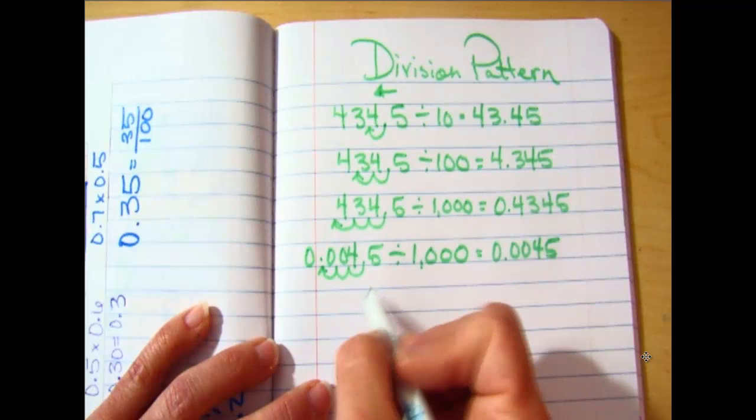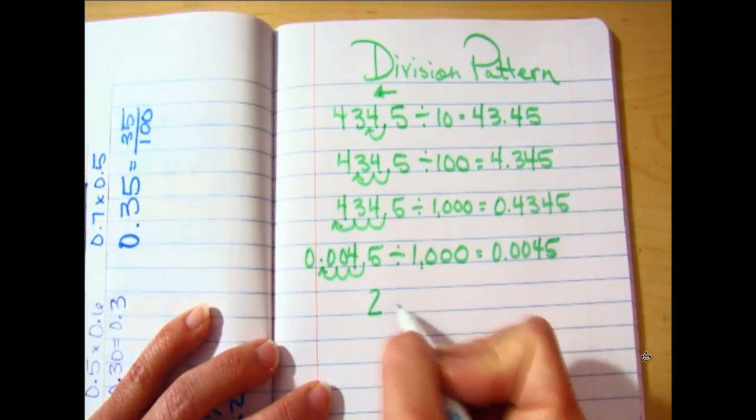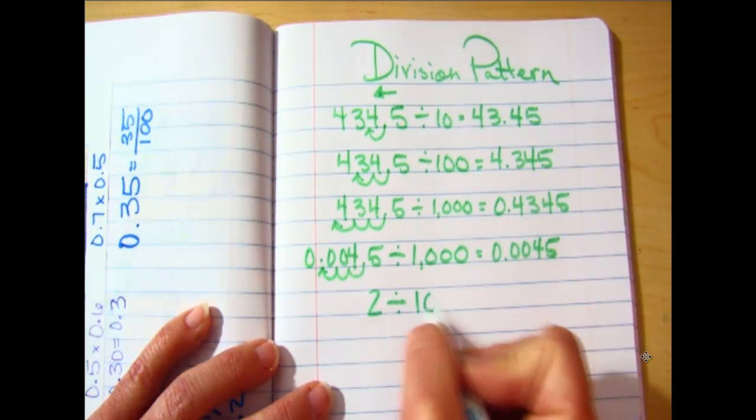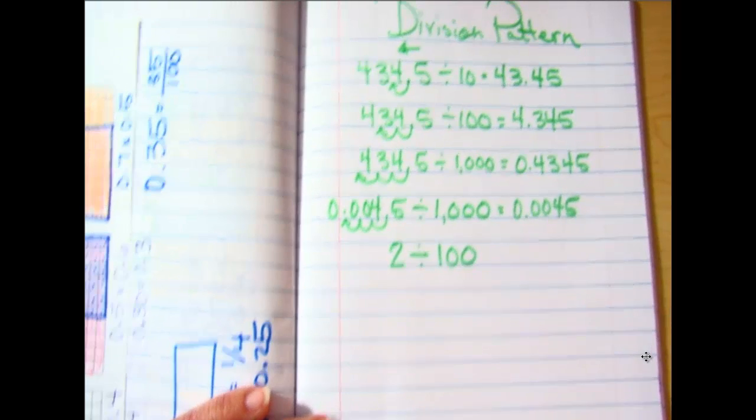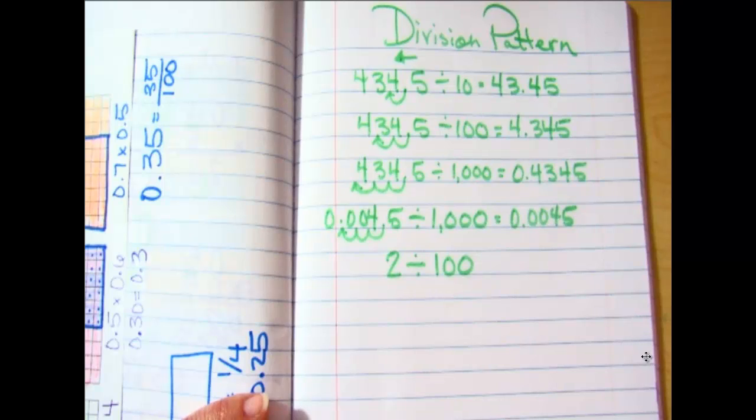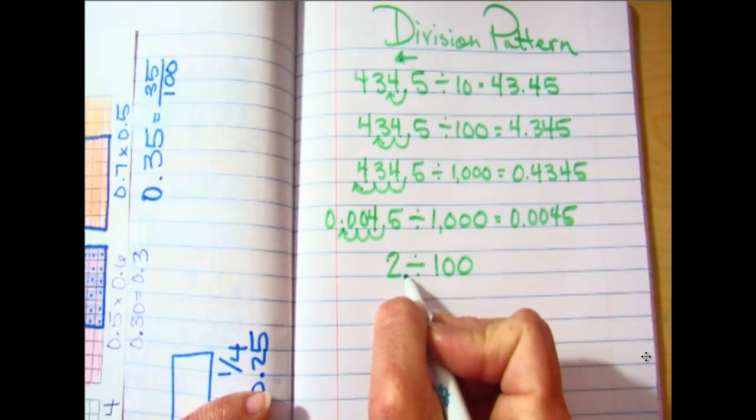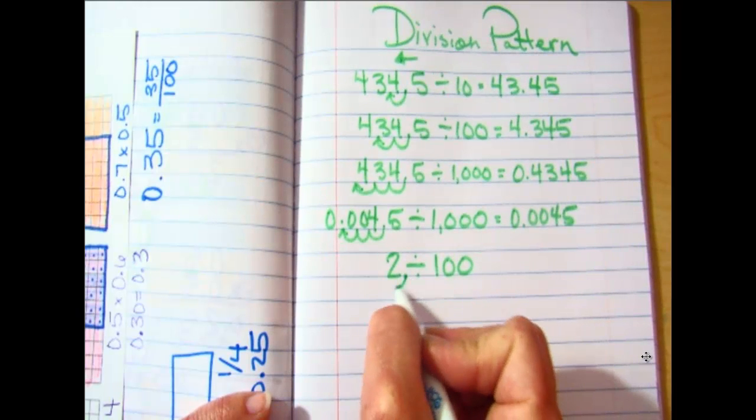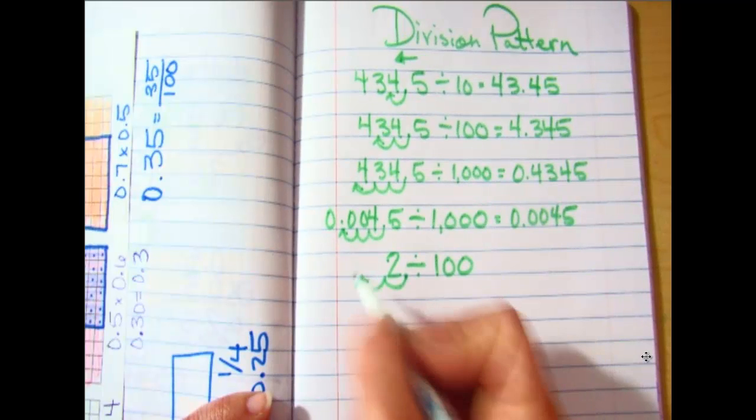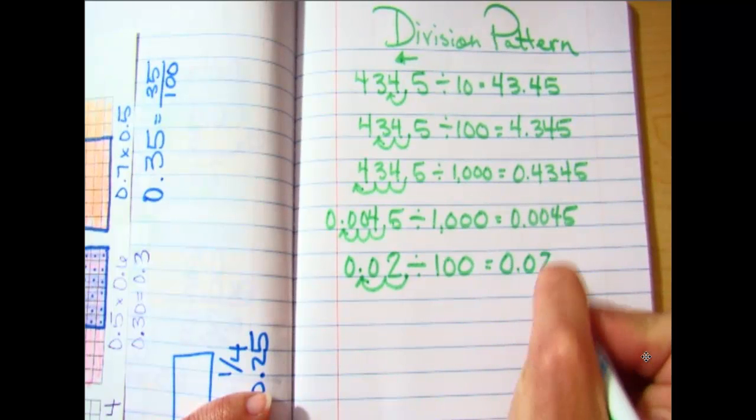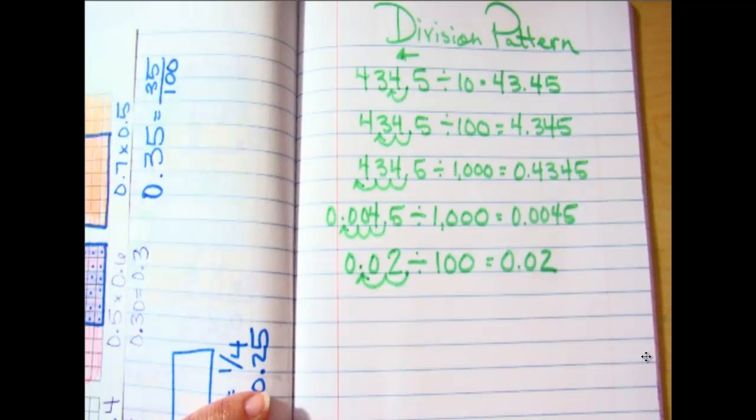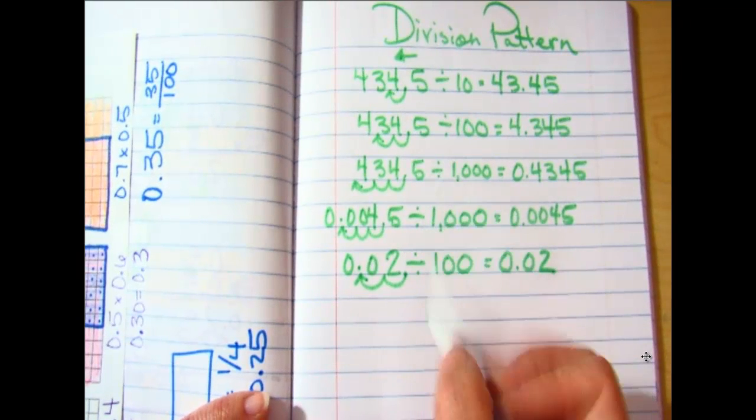What about if I did 2 divided by a hundred? How would I do that one? This is when they start looking really weird to you guys. You're not used to seeing a small number come first. So I add a decimal here and then I'm gonna move it two times and I put zeros in my empty spots just like that. Sometimes you're going to be dividing by 10.